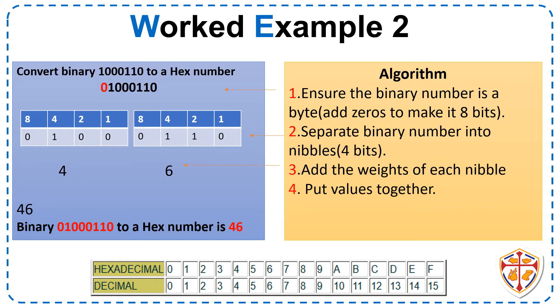Step 4. Put values together. 4 and 6 is 46. The binary number 01001110 to a hex number is 46.